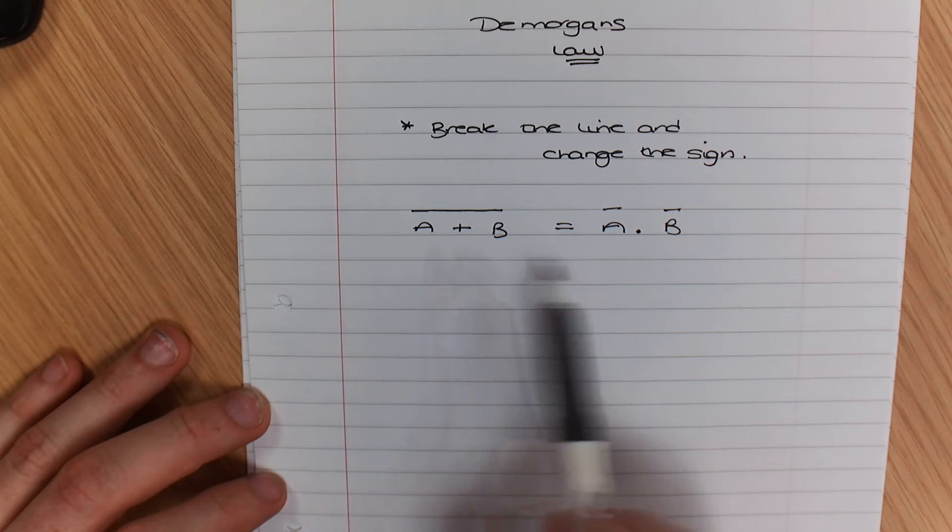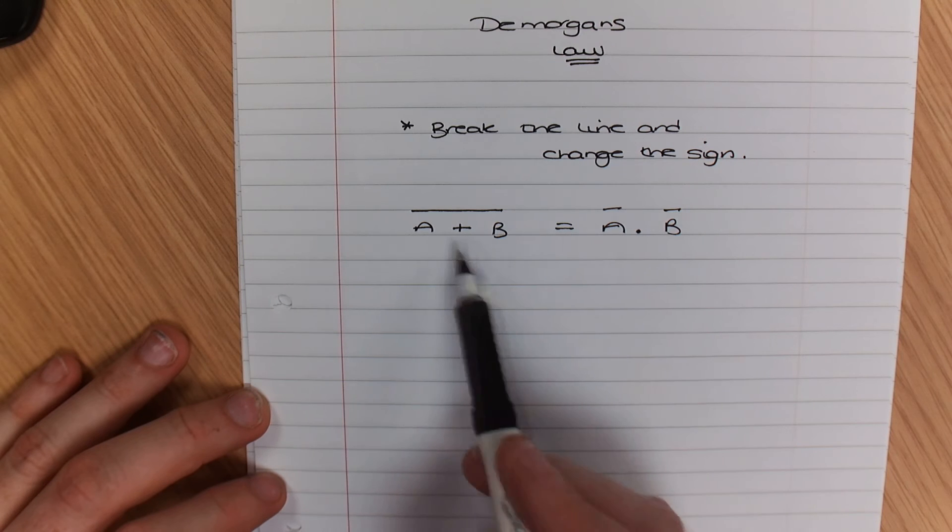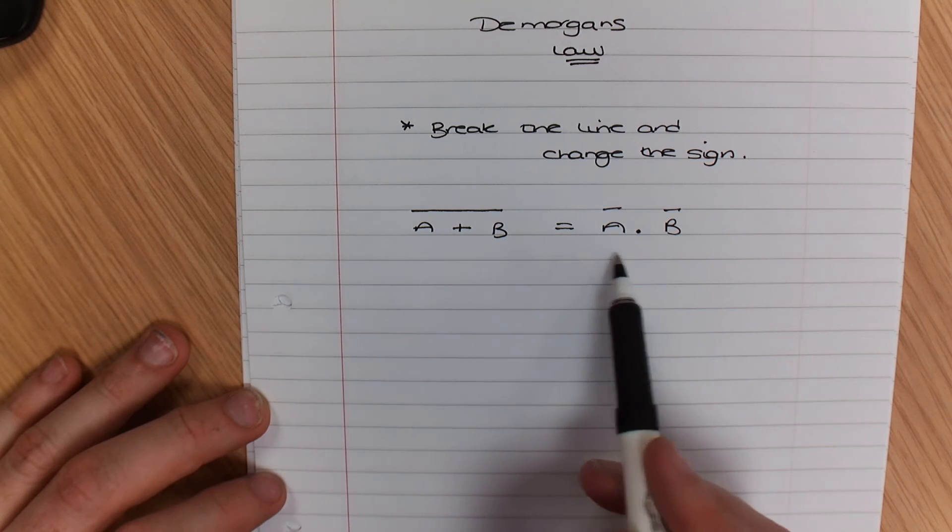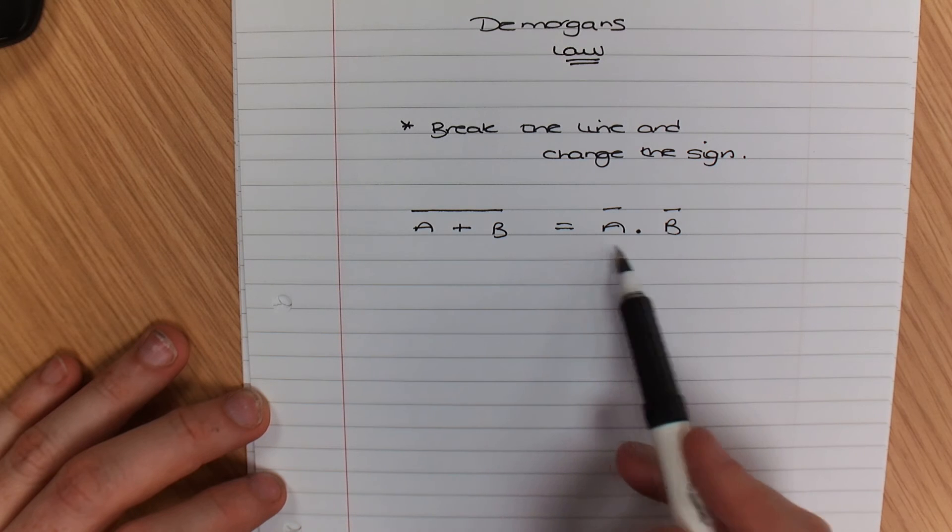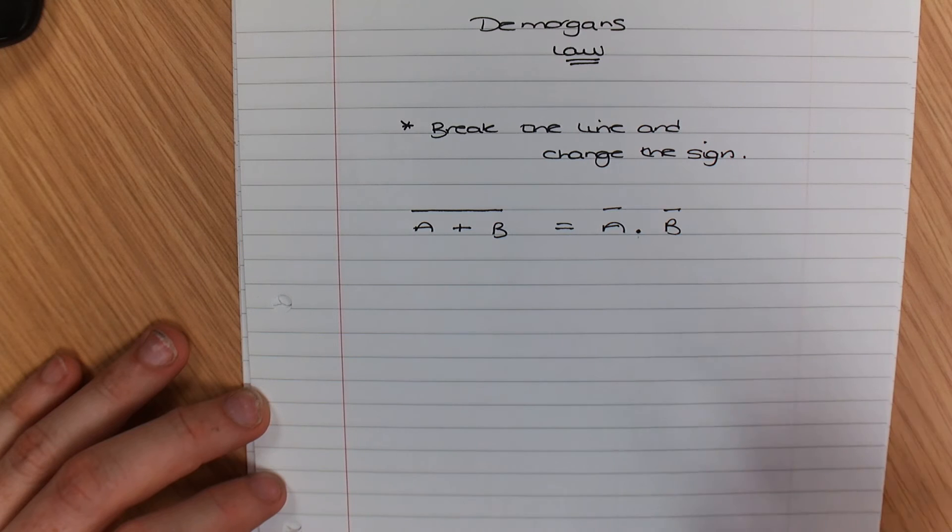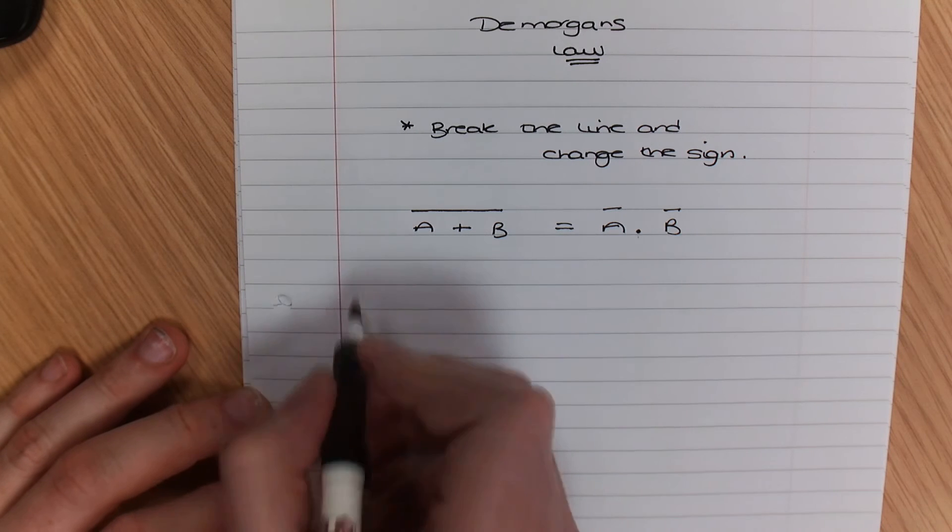The reason why this is useful is because when you're simplifying some of the terms, you can change them, and then you'll be able to apply the rules and factorize because they're using the sign that is similar to some of the others. So let me just demonstrate this here.